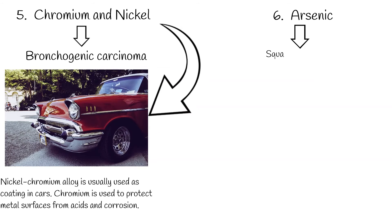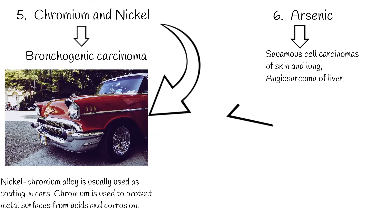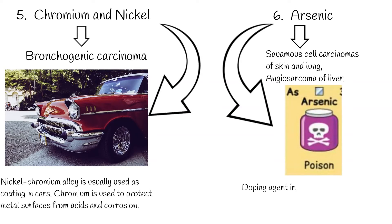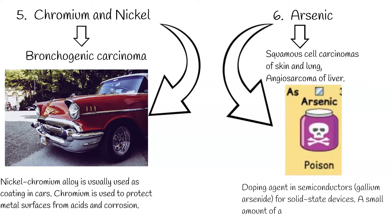6. Arsenic causes squamous cell carcinomas of the skin and lung, and angiosarcoma of the liver. Arsenic is a well-known poison. It is used as a doping agent in semiconductors — for example, gallium arsenide — for solid-state devices, and a small amount of arsenic is used in alloys.